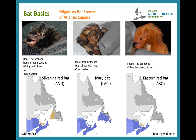The hoary bat is Canada's biggest bat species at about 30 to 35 grams — still fairly small. It's found in the Maritimes and has occasionally been found in southern Newfoundland, though it may be more widespread. It roosts among tree branches rather than in cavities — hanging off the branches themselves — and forages high above clearings and over open water.